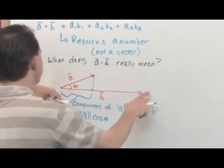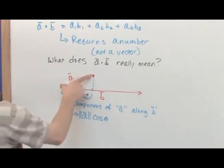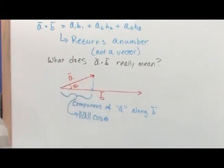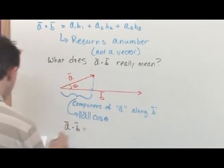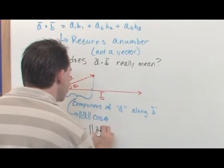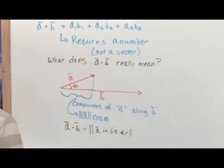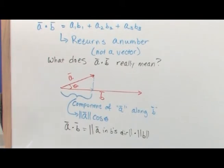If I take that quantity and multiply it by the length of vector b, that is what the dot product is. What you're really doing when you take a dot b is multiplying the lengths together, but only the length of a that falls in the b direction. So: a dot b equals the length of a in b's direction times the length of b — mathematically that's |a| times cosθ times |b|. That's a number, not a vector.